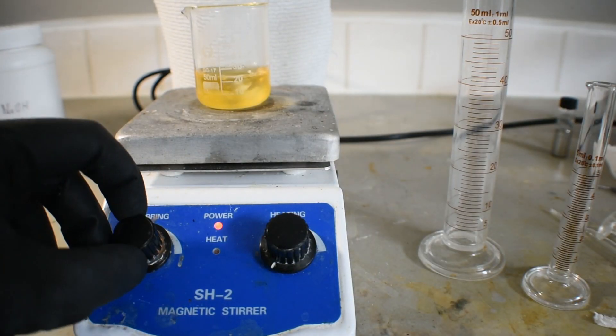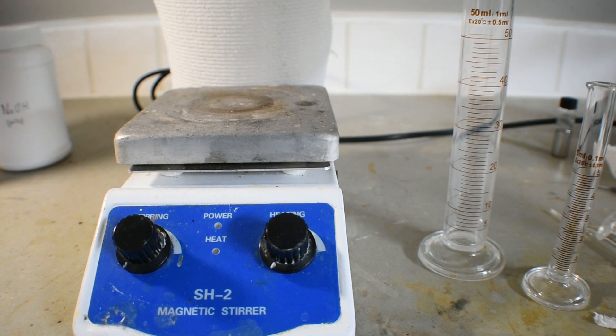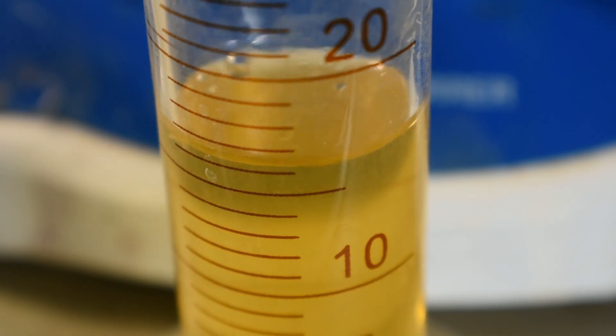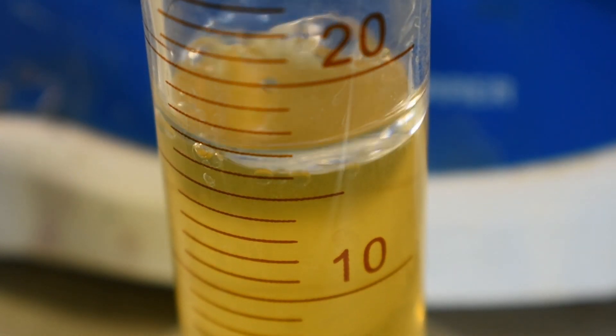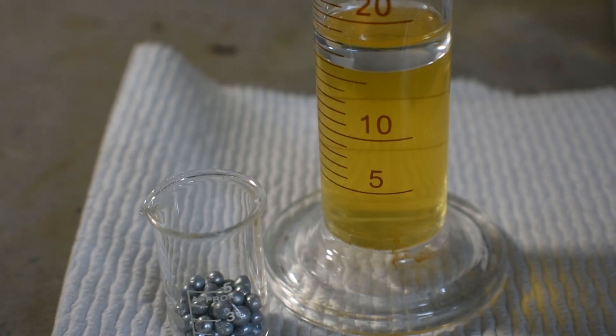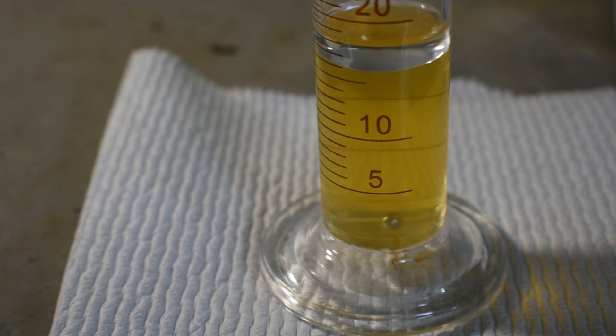The first step in the second method involves making a solution of tetracyanonicolate strongly basic with the solution of a hydroxide. This is then put in a graduated cylinder, and a small amount of toluene is added on top as a sort of barrier to atmospheric oxygen. Granulated zinc is then added, which reacts with the hydroxide in the solution to form hydrogen gas. Hydrogen then reduces nickel-2 to nickel-1.